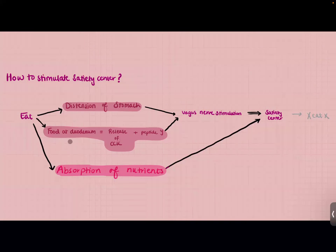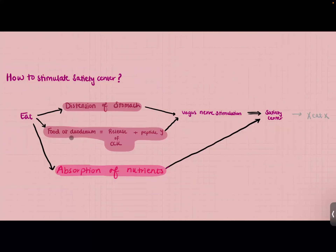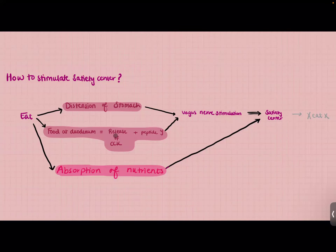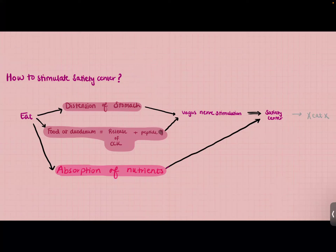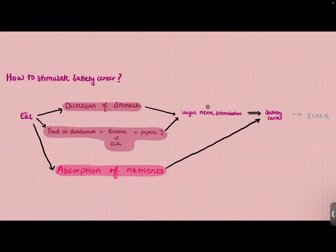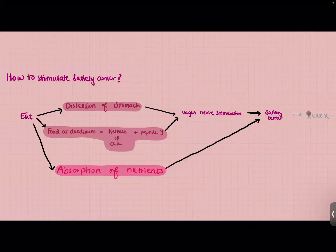The second way is when food is in the duodenum. After you eat, when food reaches the duodenum, it will sense the food and release a hormone known as cholecystokinin (CCK). The second hormone, peptide YY, is released by the lower intestines. Both of these hormones stimulate the vagus nerve, which tells the satiety center we have eaten and we don't need to eat anymore.